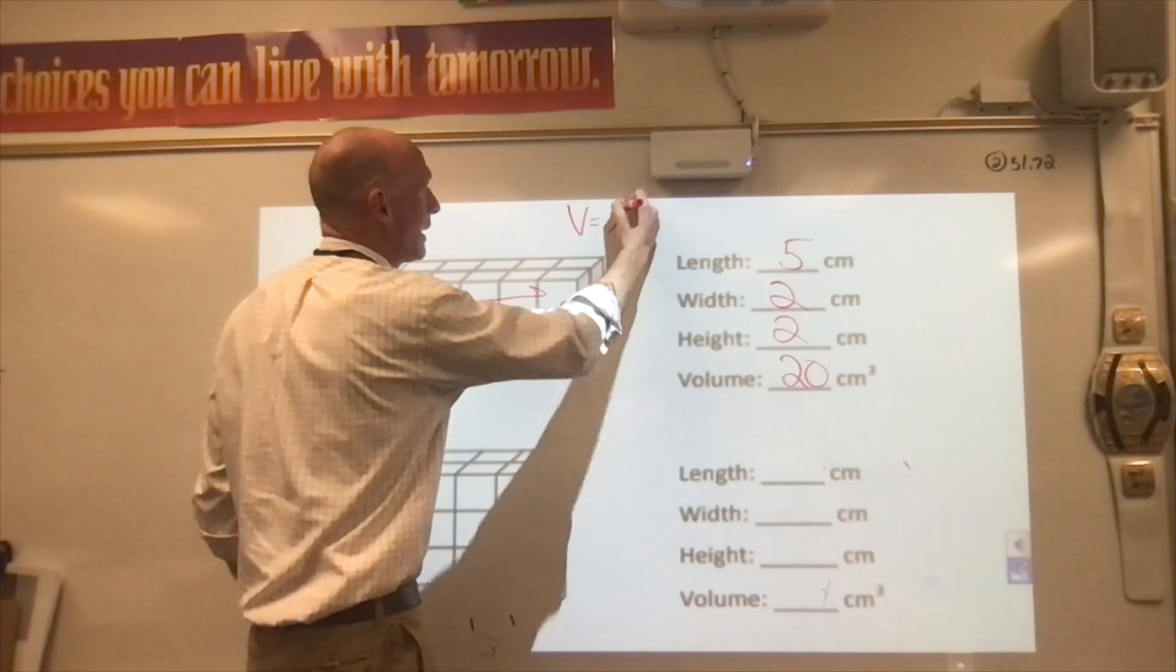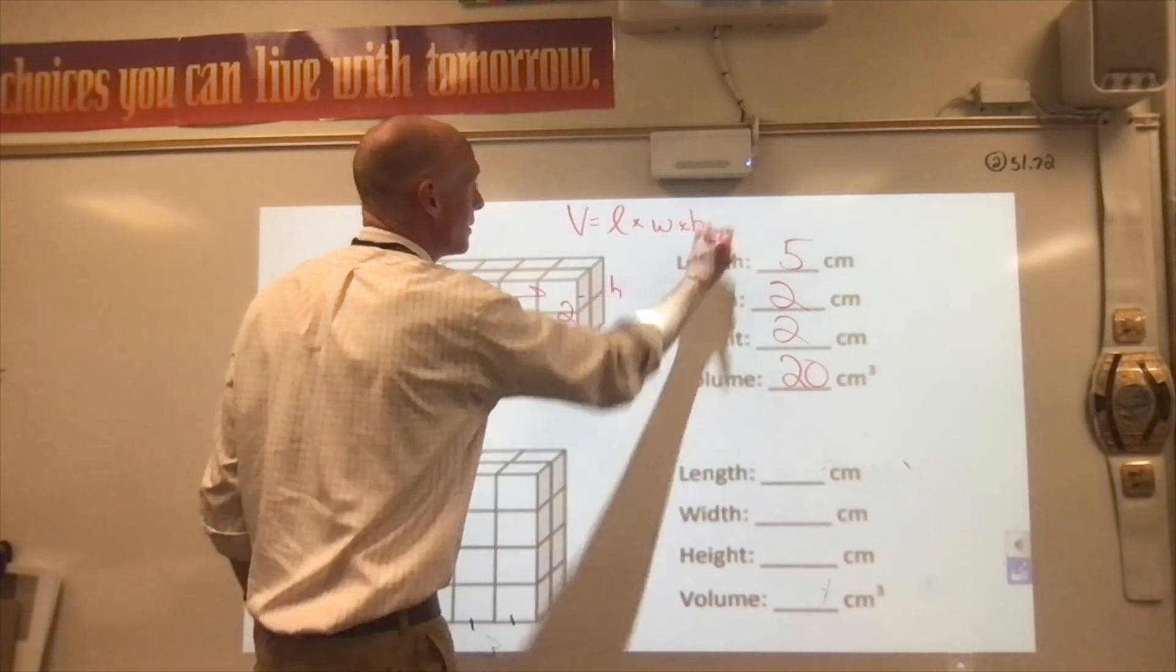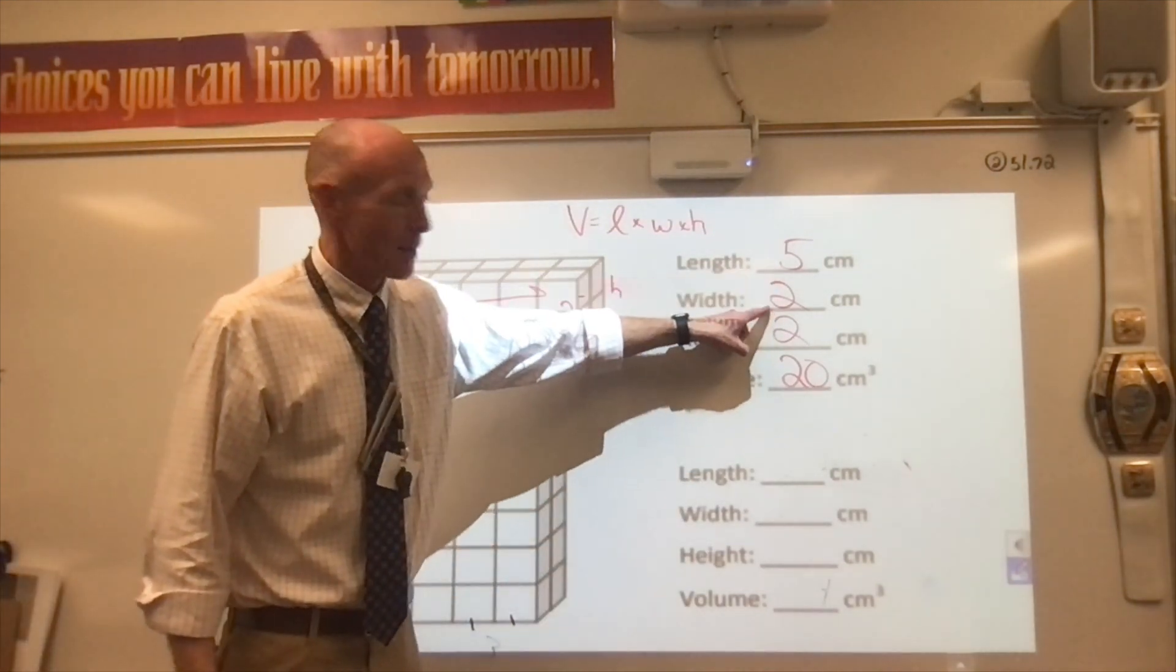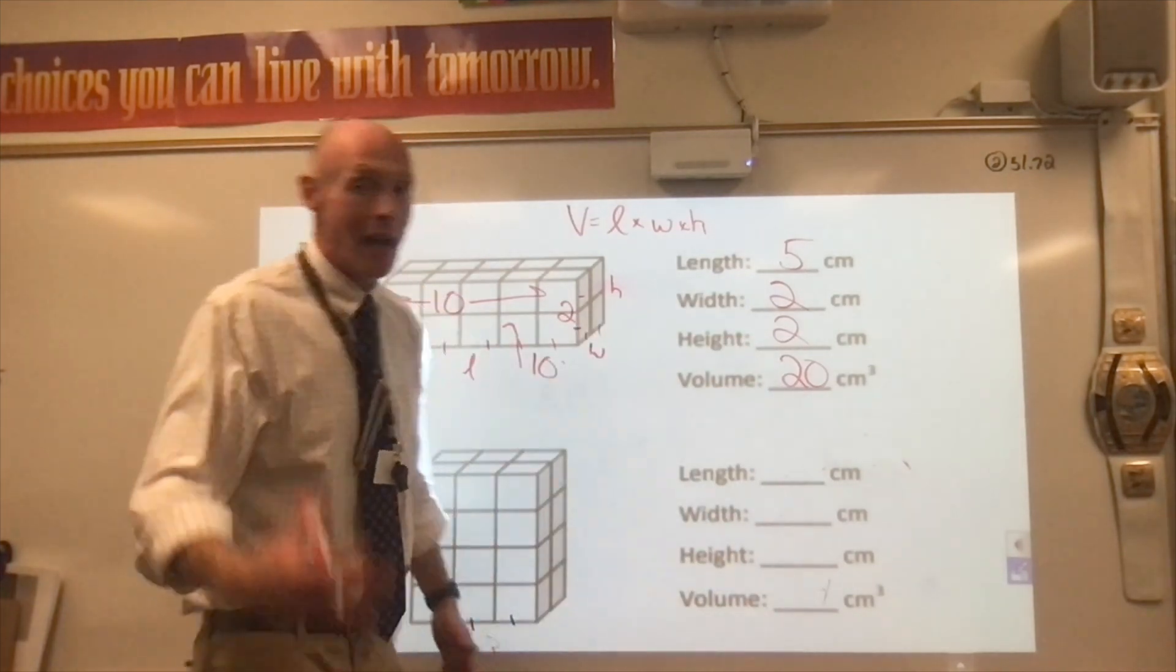Here's what it looks like. Volume equals length times width times height. Take a look. Five times two is ten, times two is twenty. Boom. Got it.